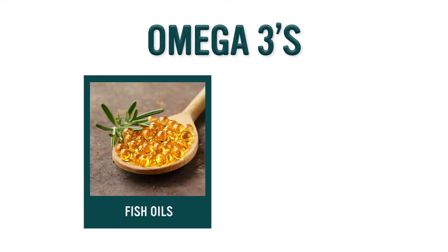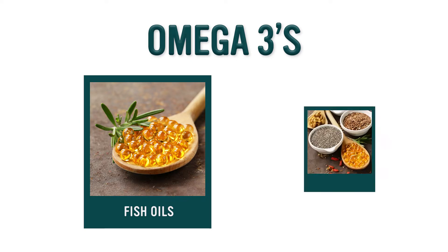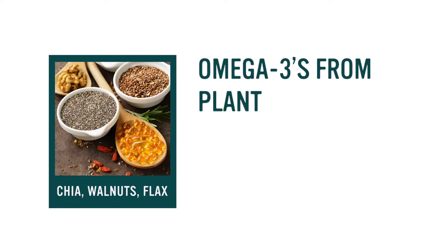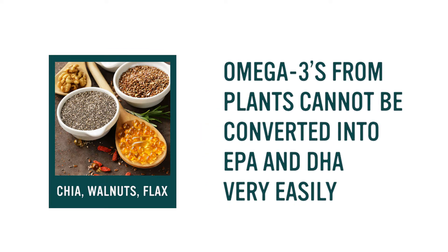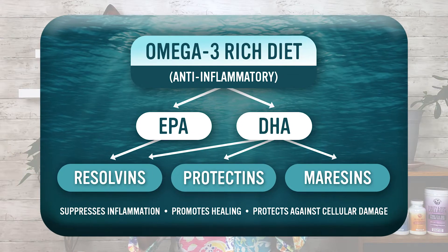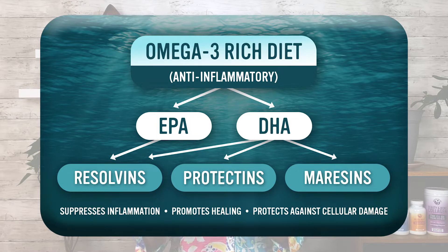The omega-3s we commonly think of as the fish oils, and in fact some of the most important omega-3s are the fish oils. However, omega-3s are also available in certain plants like chia, walnuts, and flax. Good to note that those omega-3s from plants cannot be converted into EPA and DHA very easily. EPA and DHA are the essential fats from fish, and that's actually the product we probably most need to consume.